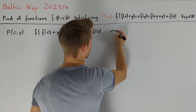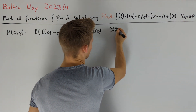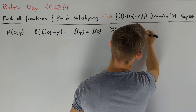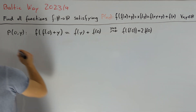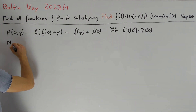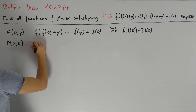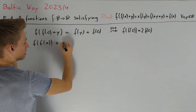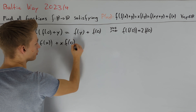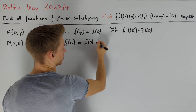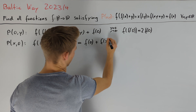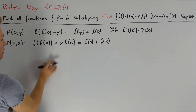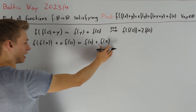For y=0, this especially implies that f(f(0)) = 2·f(0). Setting y=0 in the original equation, we get that f(f(x)) + x·f(0) = f(0) + f(x). It would be great if f(0) = 0 because then we'd have f(f(x)) = f(x), but right now we are not able to prove this.